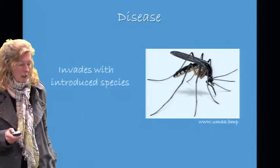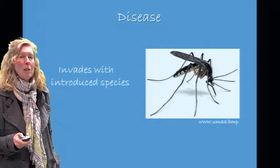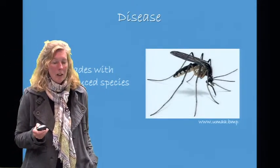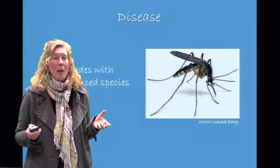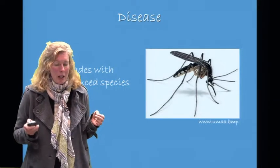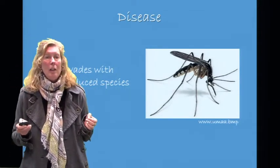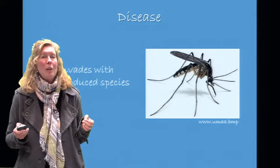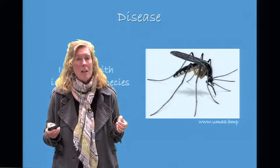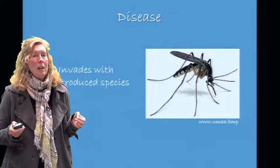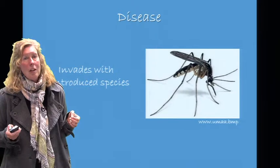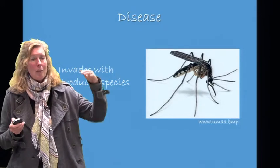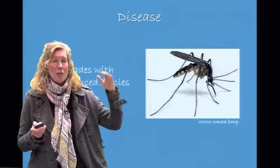Disease often piggybacks in with introduced species. Hawaii used to be an even greater paradise than it is today. Mosquitoes are now in Hawaii, and they brought with them avian malaria. The native bird species in Hawaii did not co-evolve with the mosquito or with avian malaria, so they have built up no immunity. Since the introduction of avian malaria, we have seen extinctions in the native bird populations in Hawaii. With climate change, birds are actually moving up the mountains in Hawaii, and the mosquitoes are tracking them.